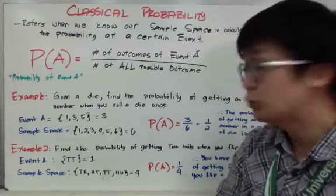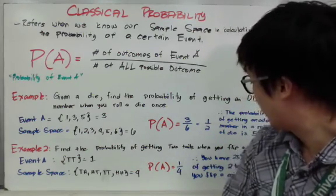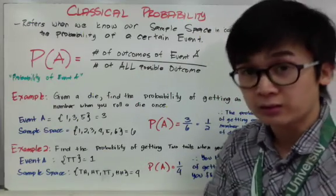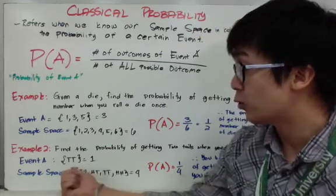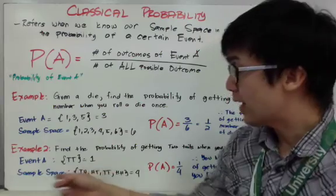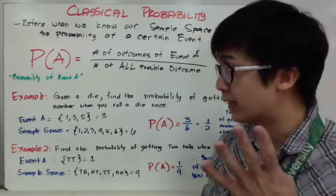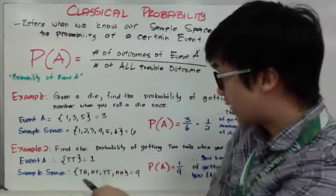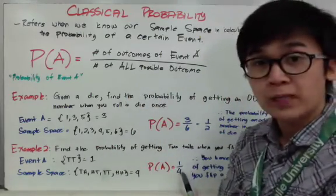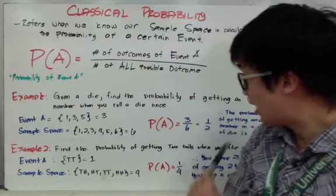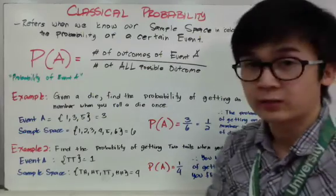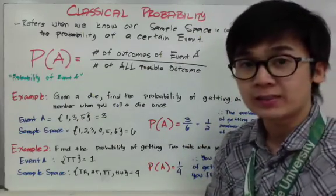In example two, let's find the probability of getting two tails when you flip a coin twice. Event A is getting two tails, and there is only one possible outcome for that event: TT. So the numerator is one. Our sample space has four possible outcomes, so the denominator is four. Using classical probability, one over four is our answer. Therefore, you have a 25% chance of getting two tails when you flip a coin twice. This is how you use classical probability in statistics.